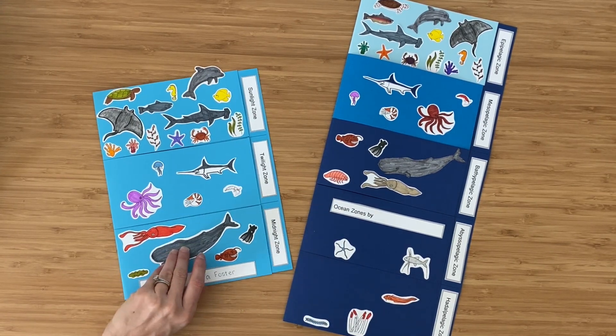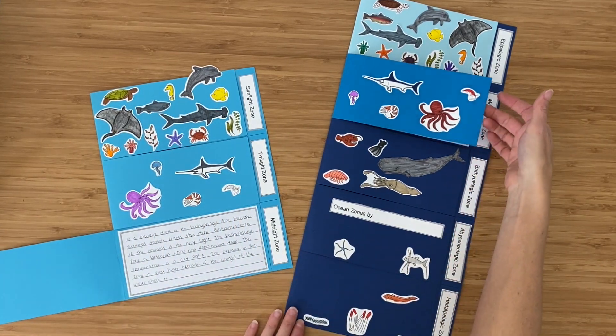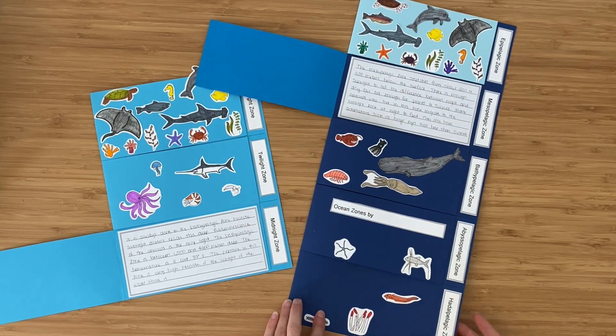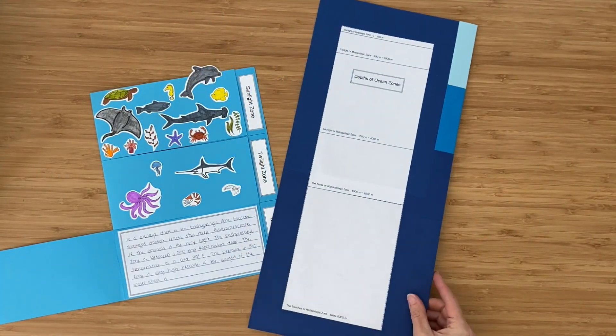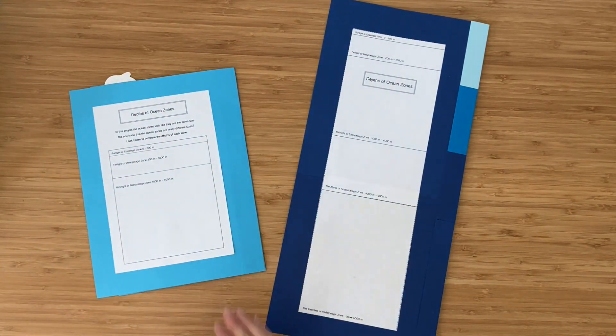You'll color and cut out the sea life, do research and write about what it's like in each zone, and then glue this on the back to show how deep those different zones actually are.